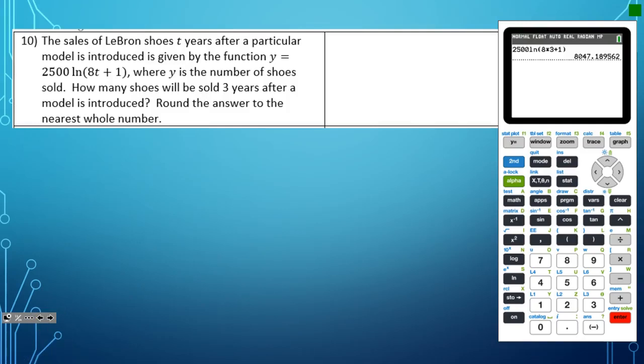All you need to do in this problem is plug in the number of years, which is 3, into the equation y equals 2,500 times the natural log of 8t plus 1. So we're plugging in 3 for t.